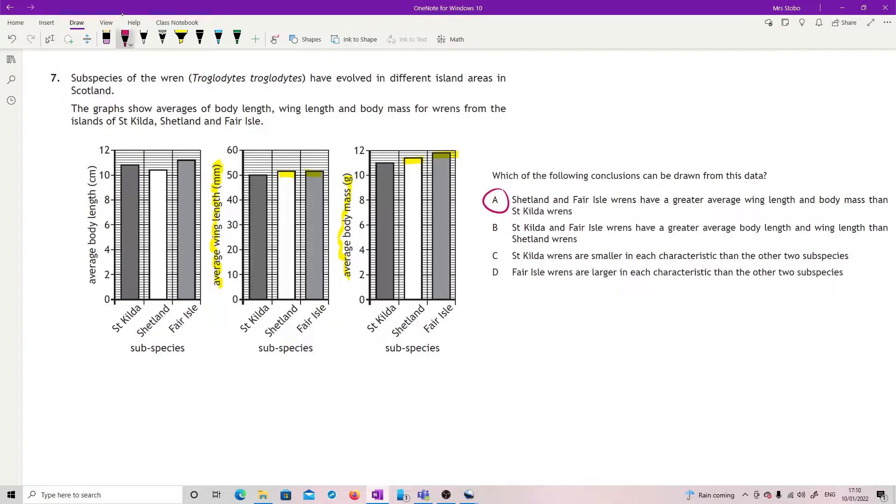But just to run the rest to be sure: St Kilda and Fair Isle wrens have a greater average body length and wing length than Shetland wrens. We're looking at the body length, this one over here. We said St Kilda and Fair Isle have a greater average body length than Shetland - well they are definitely longer than the Shetland. However, wing length - the Shetland one here is longer than the St Kilda, which is what they didn't see, so not that one. St Kilda wrens are smaller in each characteristic than the other two - well we've got this one up here again that we'd already highlighted, so that's not true. Fair Isle wrens are larger in each characteristic than the other two - again we're looking at this one here for that, and that's actually quite nasty because it's exactly the same, so therefore they're not larger. So A is still absolutely correct.